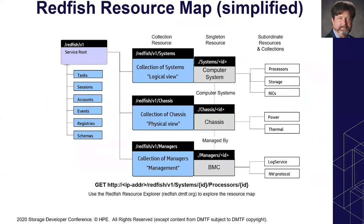One of Redfish's successes was its initial resource map. In logical views, there are overhead services on the left — tasks, sessions, accounts, events, registries — applicable to anything whether you're building a fabric manager, storage system, server, or aggregation of servers. We broke server representation into three logical components: a collection of systems, a collection of chassis, and a collection of managers. Managers are the things that manage chassis and systems — software, firmware, or chips inside the box that aren't part of the data plane or sheet metal.